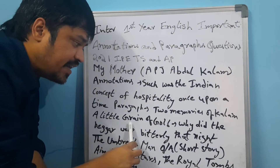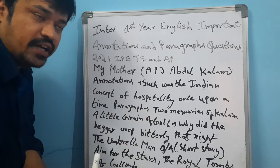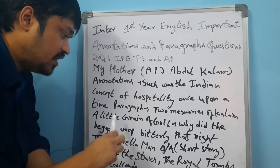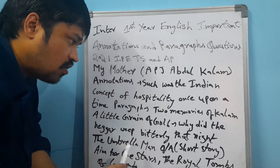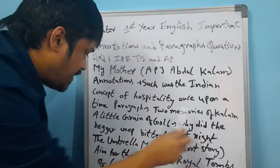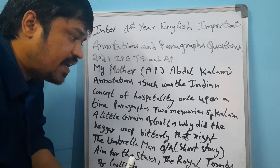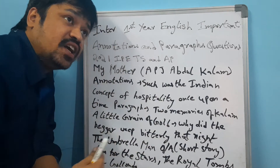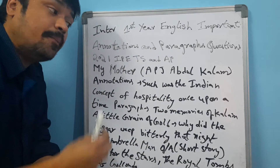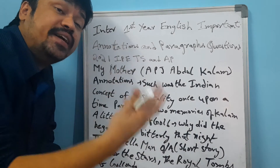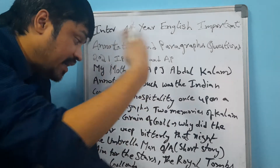The next lesson is 'A Little Grain of Gold.' In this lesson, an important question is: why did the beggar weep bitterly that night?